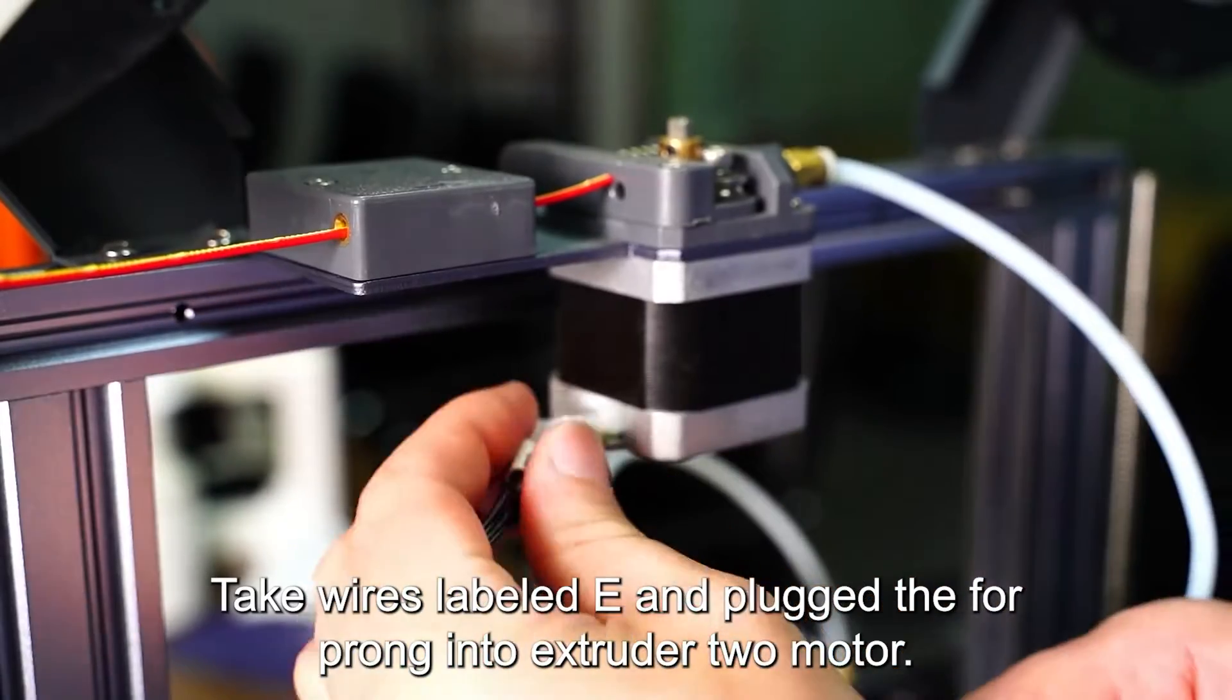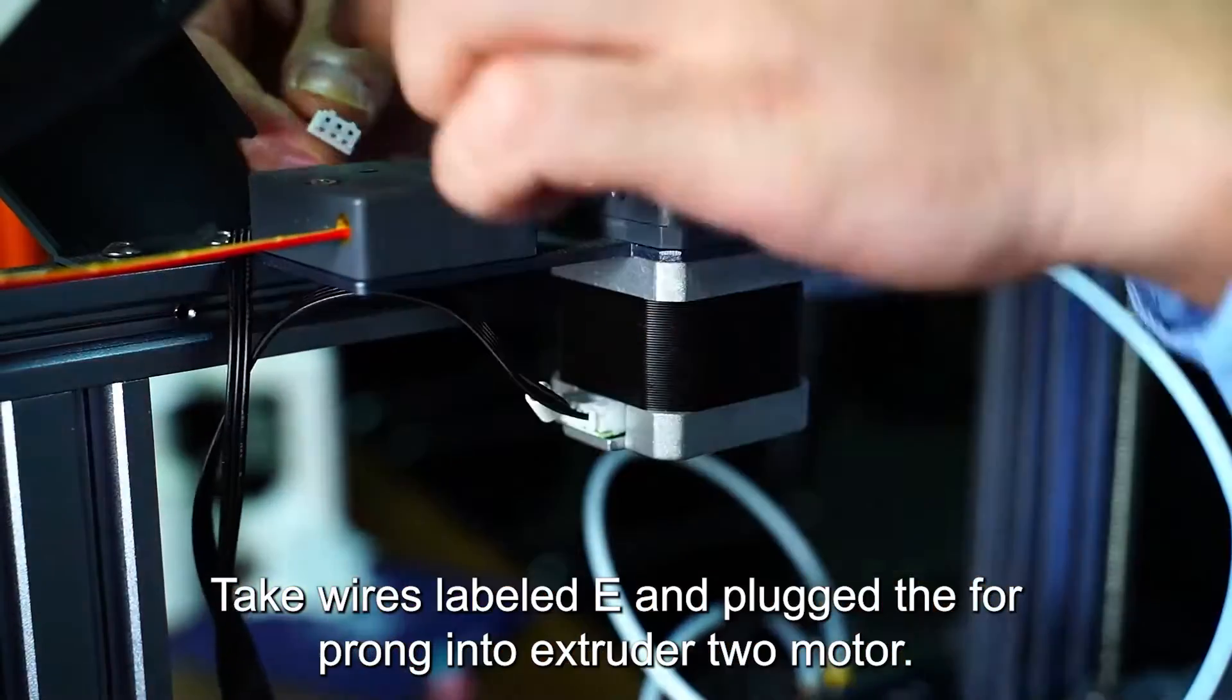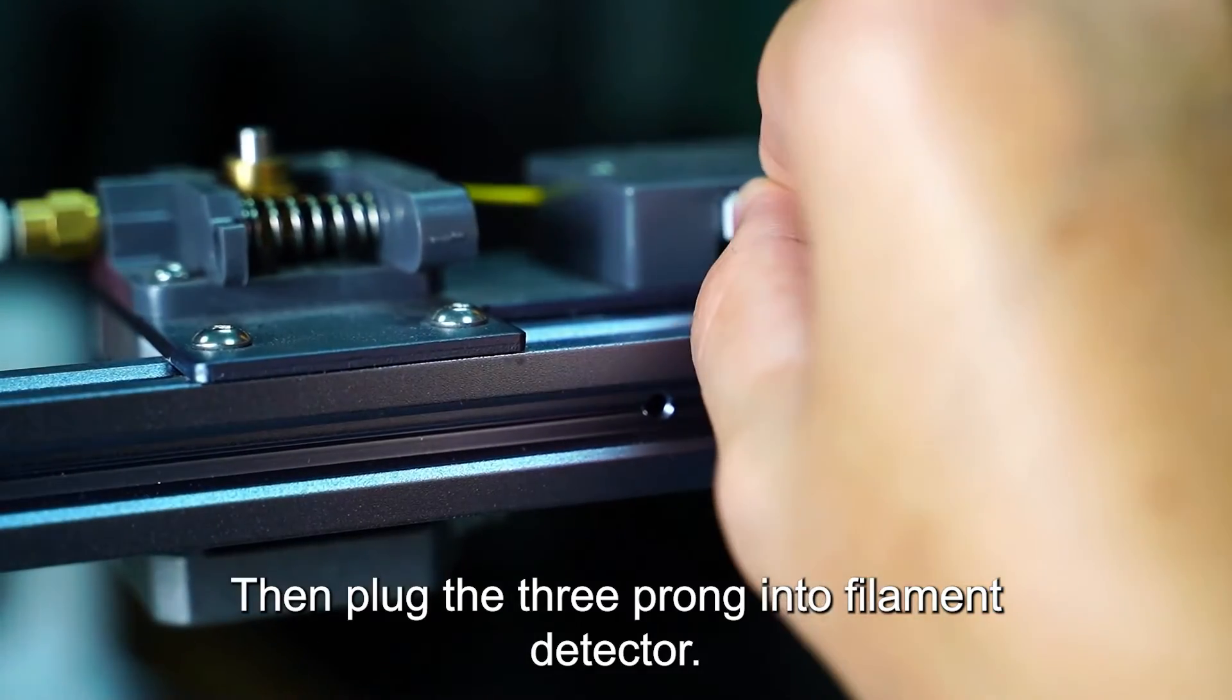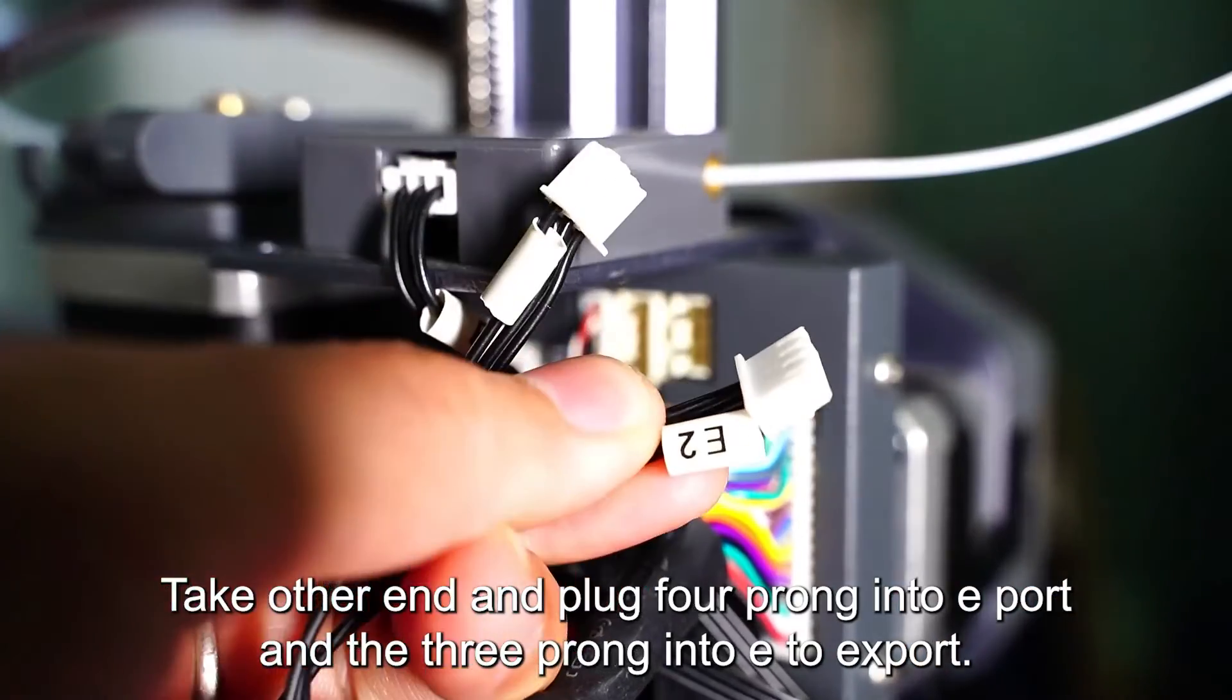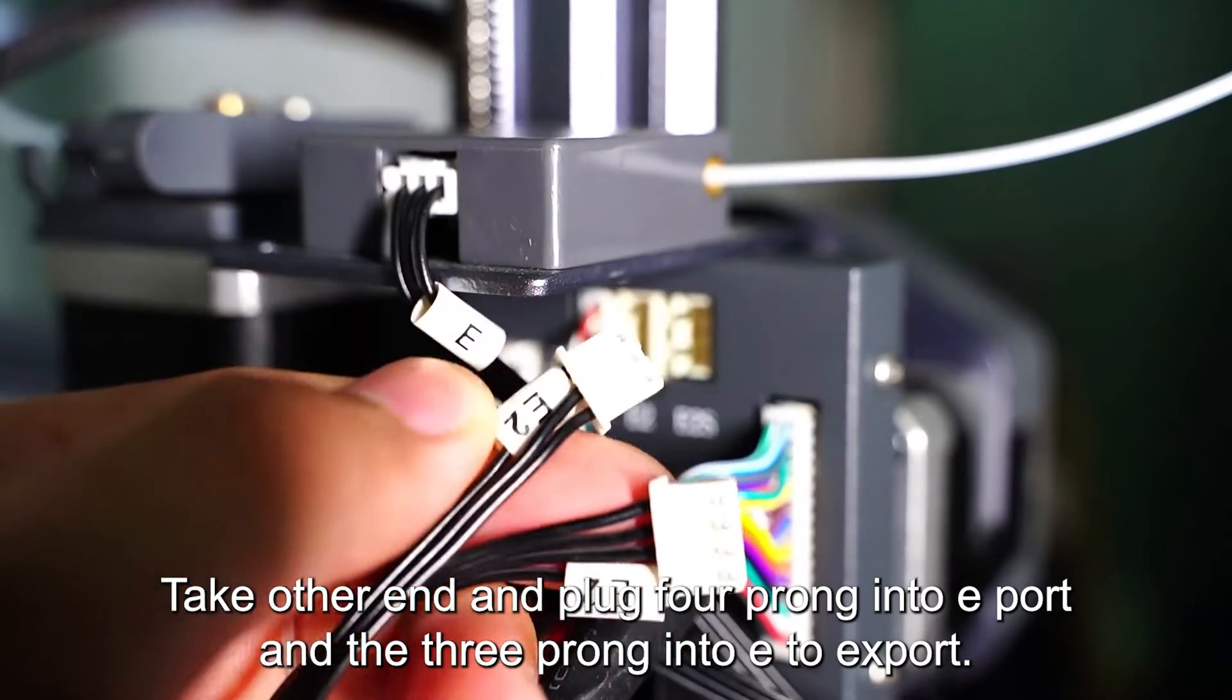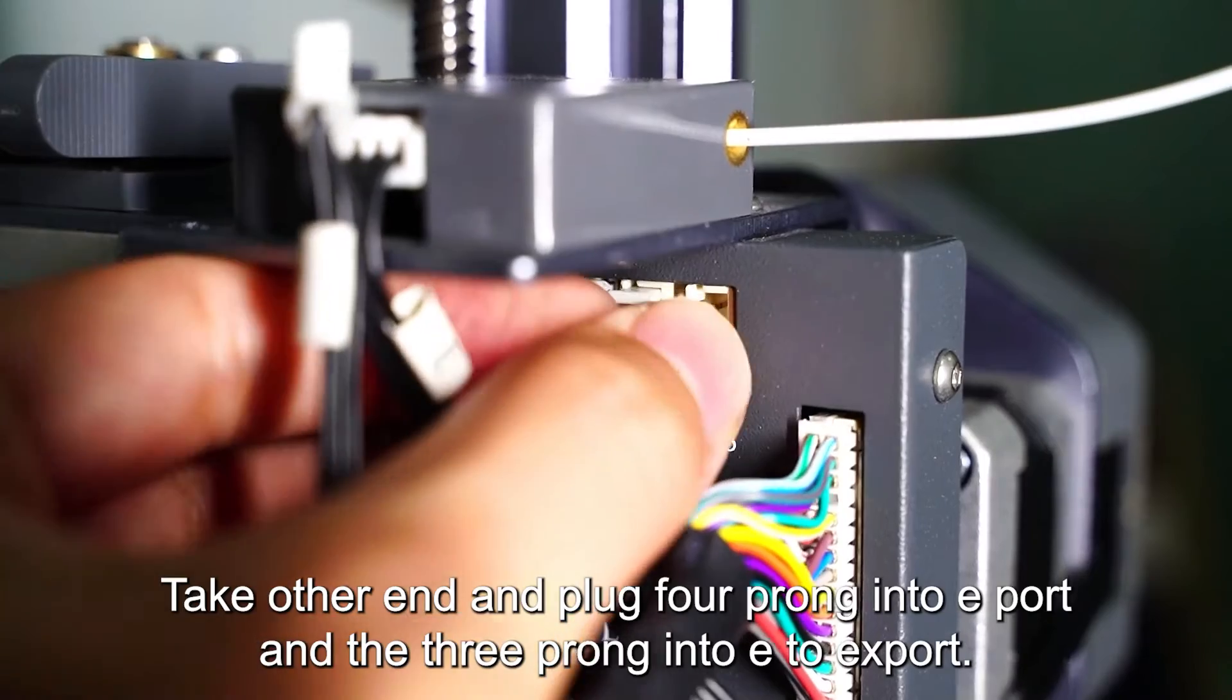Take wires labeled E2 and plug the four prong into extruder 2 motor. Then plug the three prong into filament detector. Take the other end and plug four prong into E2 port and the three prong into E2S port.